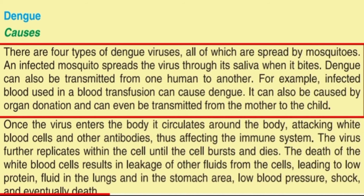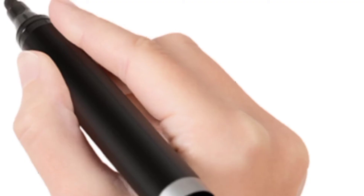The replication continues until the cell bursts and dies. Due to the death of the white blood cells and leakage of other fluid from the cells, this can lead to low protein fluid in the lungs and the stomach area, and low blood pressure.